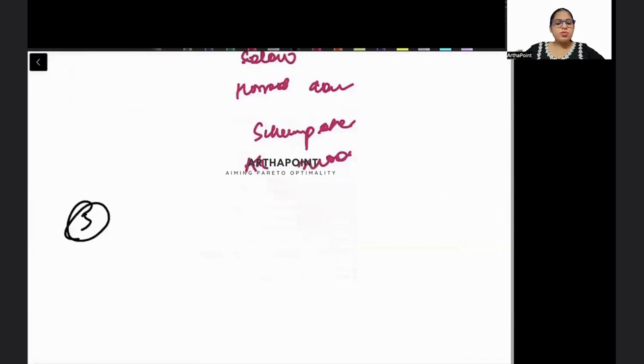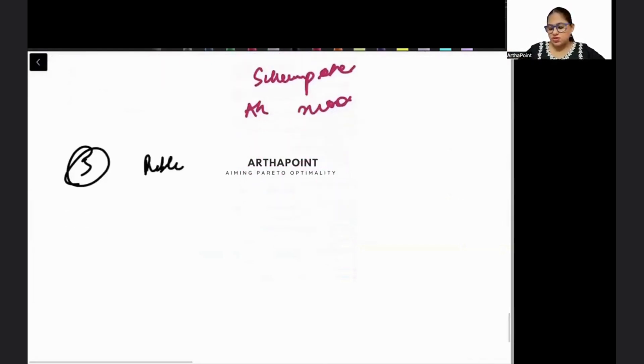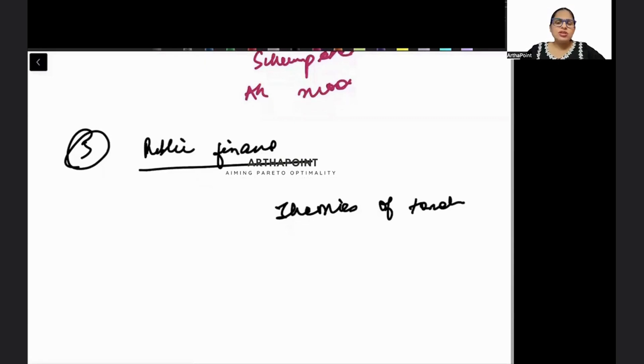The next thing that can be asked in exam, the fifth one is going to be your public finance. In public finance, just know few theories of taxation - know what is progressive tax, what is proportional tax. Then just go ahead and know what are the theories of public expenditure.